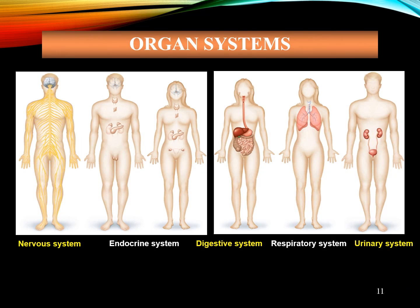The human digestive system consists of the gastrointestinal tract plus the accessory organs of digestion. Digestion involves the breakdown of food into smaller and smaller components until they can be absorbed and assimilated into the body. The respiratory system is a biological system consisting of specific organs and structures used for gas exchange in animals and plants. The anatomy and physiology that makes this happen varies greatly depending on the size of the organism, the environment in which it lives, and its evolutionary history.